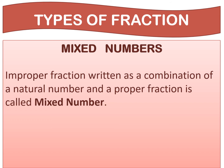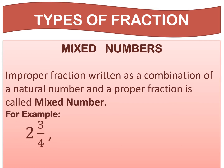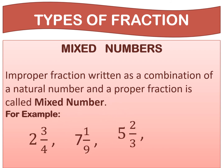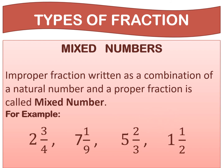The next topic is mixed numbers. An improper fraction written as a combination of a natural number and a proper fraction is called a mixed number. For example, 2 and 3 upon 4 — here 2 is a natural number and 3 upon 4 is a proper fraction, so it is a combination of a natural number and a proper fraction. Other examples are 7 and 1 upon 9, 5 and 2 upon 3, and 1 and 1 upon 2.